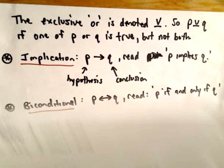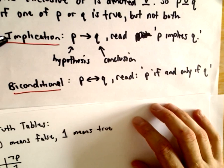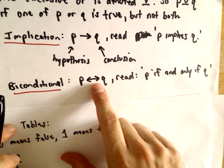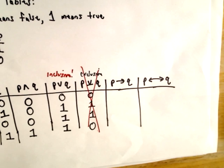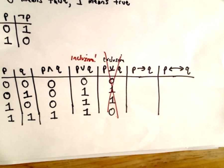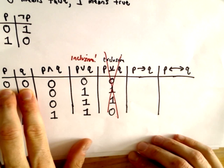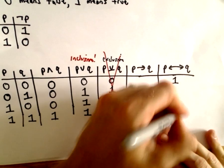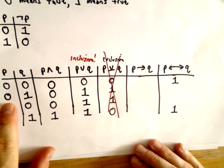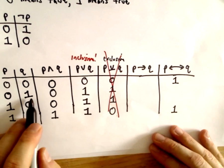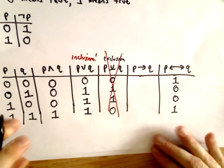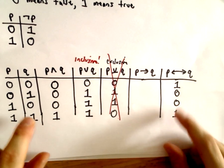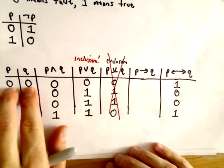The biconditional has an arrow pointing at both statements, and we read it as 'p if and only if q.' This compound statement is true if both p and q have the same truth value. So if p and q are both false, the statement is true; if they're both true, it's also true. The other two cases - where p and q have different truth values - are false. The biconditional is only true if both statements share the same truth value.